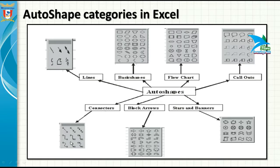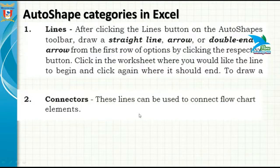Connectors are used to connect one part of a shape to another, like connecting all the elements of a flowchart. Block Arrows allow you to draw different types of arrows on the worksheet. Then Stars and Banners are also available in the auto shapes categories.